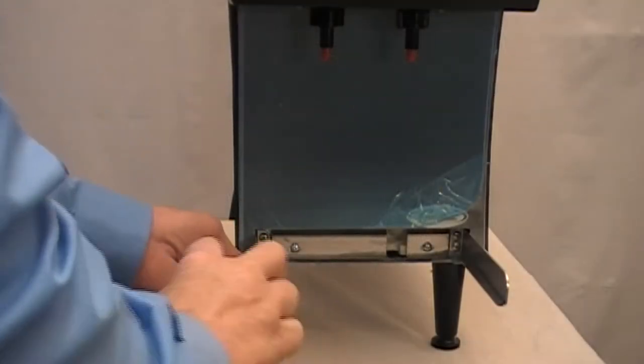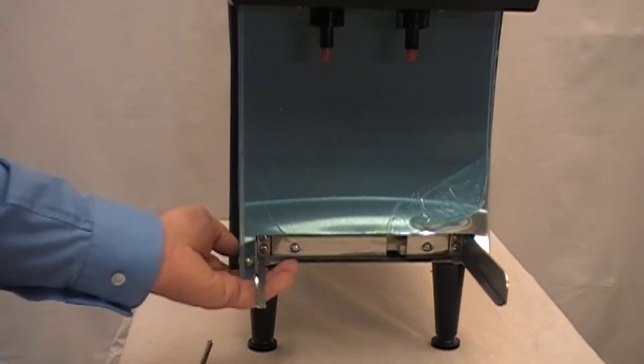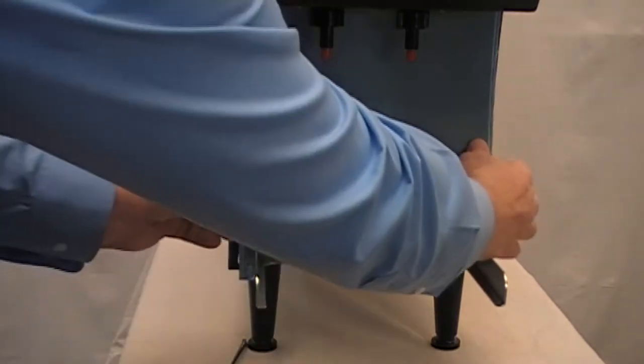Next, remove the two retaining screws holding the front splash panel and the panel itself, and remove the protective film from the splash panel.